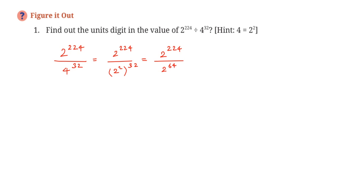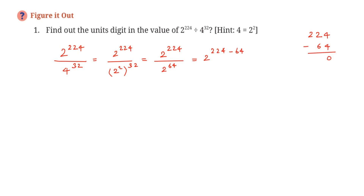Now the bases are the same and we are doing division. When the bases are the same and we divide, we subtract the powers — the base remains the same. So we get 2 to the power 224 minus 64. Subtracting: 224 minus 64 — 4 minus 4 is 0, then 22 minus 6 is 16 — so we get 160. This gives us 2 to the power 160.